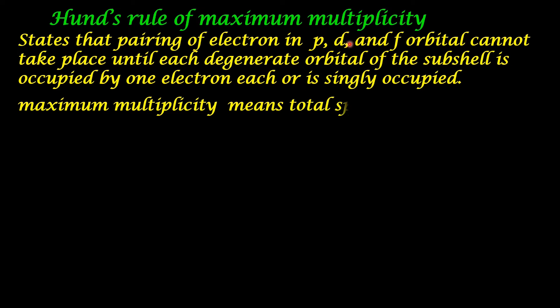Maximum multiplicity means total spin of unpaired electrons in the atom. That is, when the degenerate orbitals get filled by one electron each before getting paired fully, there will be unpaired electrons in the orbital. The spin of those electrons alone is considered, and that possibility where the spin total is maximum is the electronic configuration of that atom.